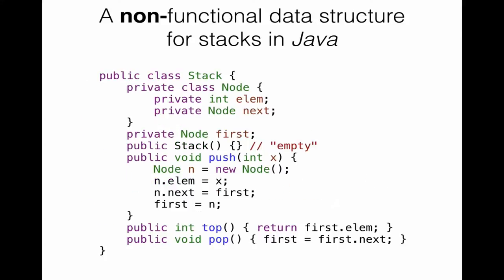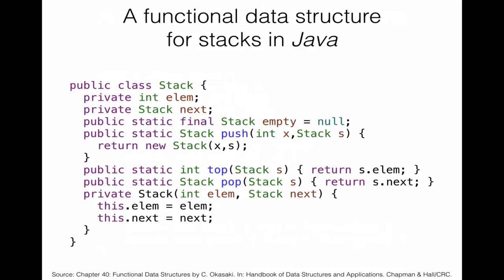This is probably not the way you would typically implement stacks in Java — you would rather use a mutable data structure. In comparison, you would have a nested class Node to model stack nodes, maintain a pointer to the top element, have a constructor for the empty stack, and push would allocate a new node and adopt the first pointer. This demonstrates the two ways: one is functional, the other is non-functional.